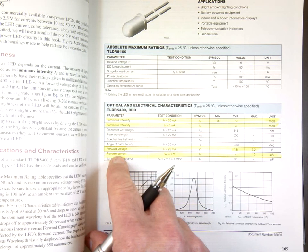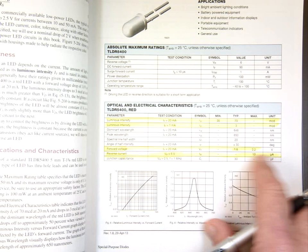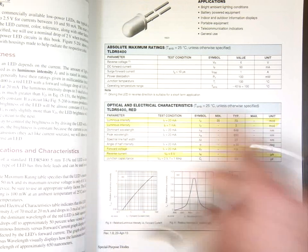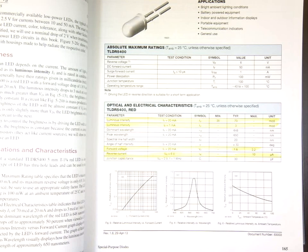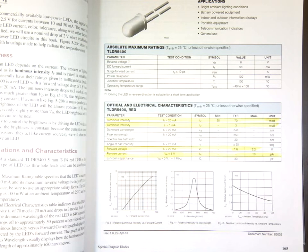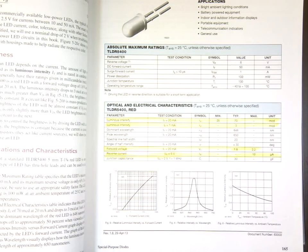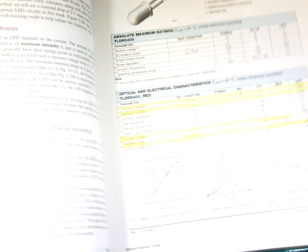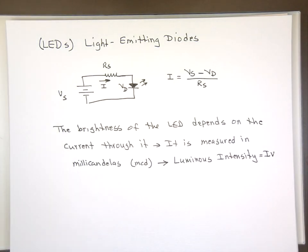And the reverse current, that's the maximum reverse current, is 10 microamp. So you can look at the schematic operation of these LEDs and look at all the information given to us right there. By the way, this LED happens to be a red one, just in case you're curious about it.